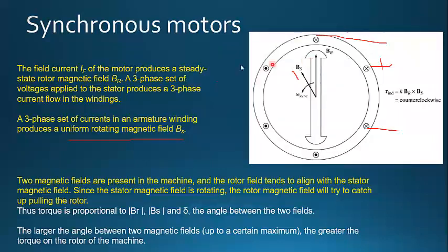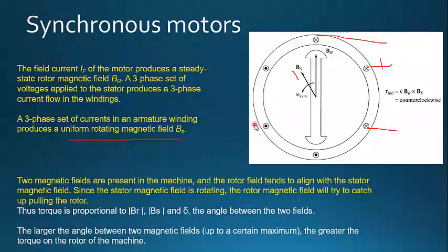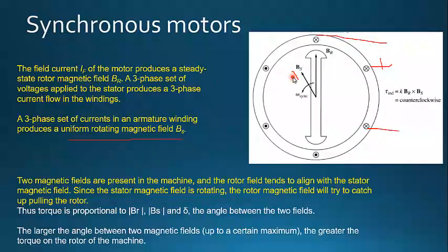A field current If in the motor produces a steady-state rotor magnetic field BR. So if you excite the field windings, you get a magnetic field created on the rotor, which we call BR. Now if you excite the armature windings with a three-phase AC power supply, we create a uniform rotating magnetic field called BS. So we now have two different magnetic fields in the motor: BR, which is a stationary magnetic field on the rotor, and BS, which is a rotating magnetic field on the stator.